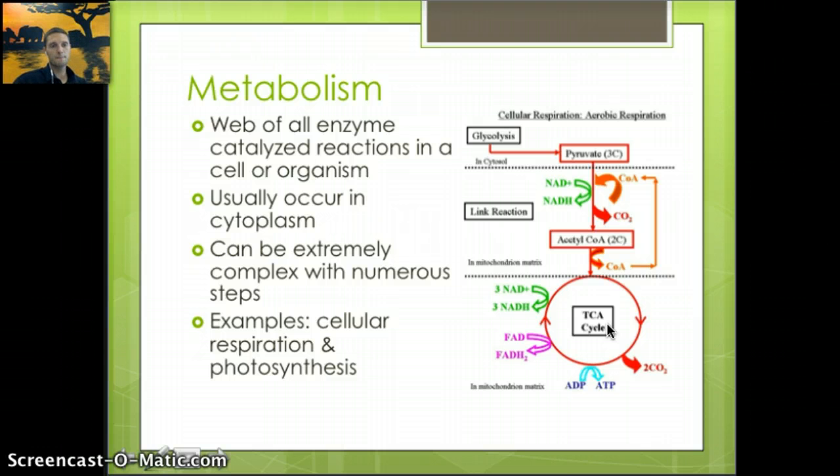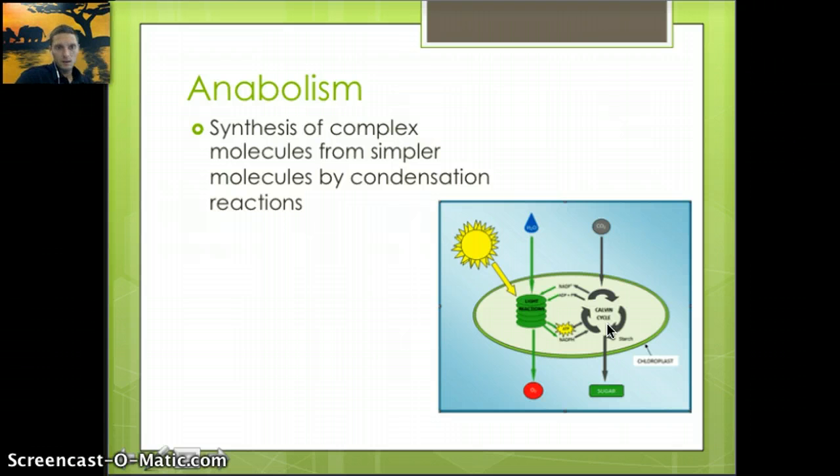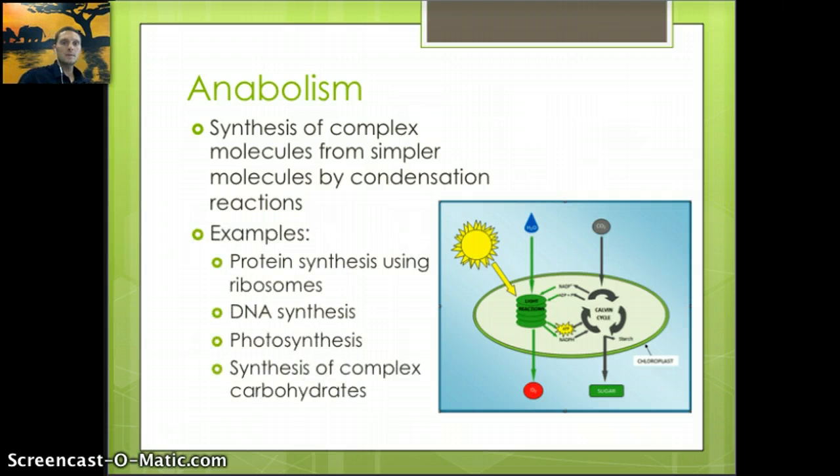Anabolism is the synthesis of complex molecules from simpler molecules by condensation reactions. We'll talk about condensation reactions more in following videos, but this is the removal or taking out of water. Examples include protein synthesis using ribosomes, DNA synthesis, photosynthesis as seen in our diagram, and synthesis of complex carbohydrates.